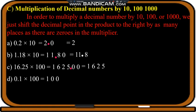Zero point one into hundred will be ten. The decimal will come after one digit from the right. Since we are having two zeros, we shift the decimal two places. After one we don't have any digit, so we take zero. The decimal will come after ten — that is nothing but ten.